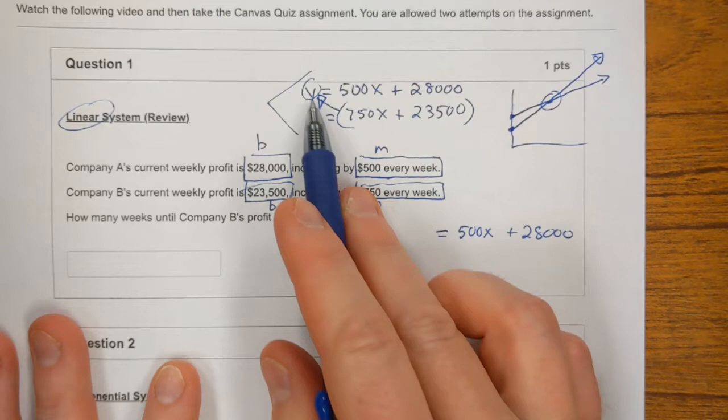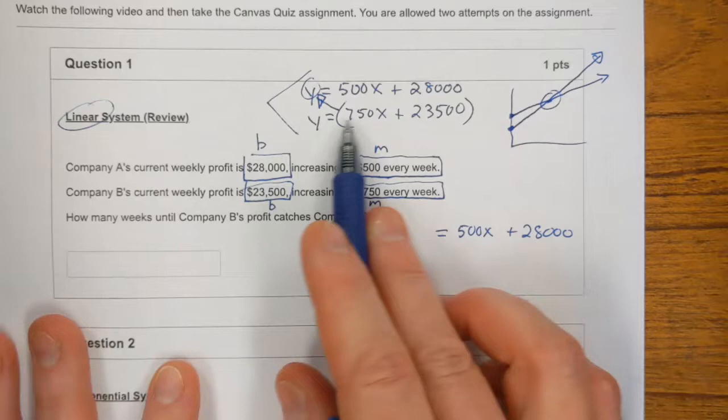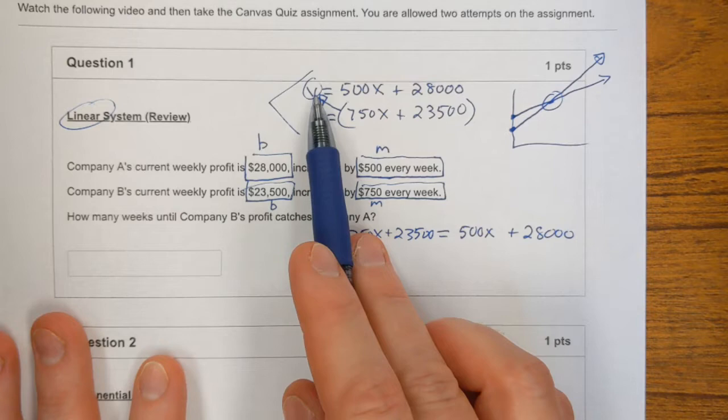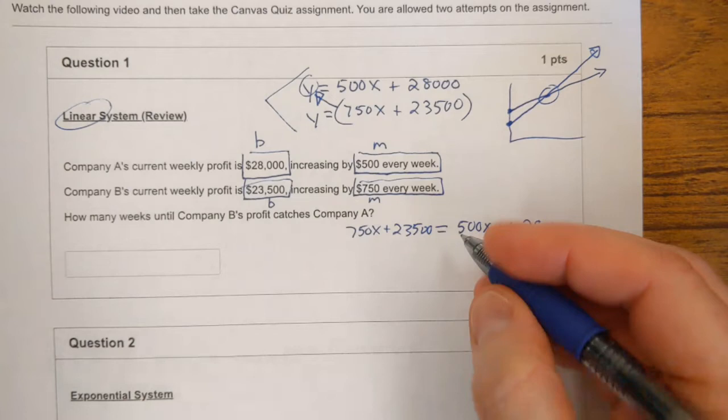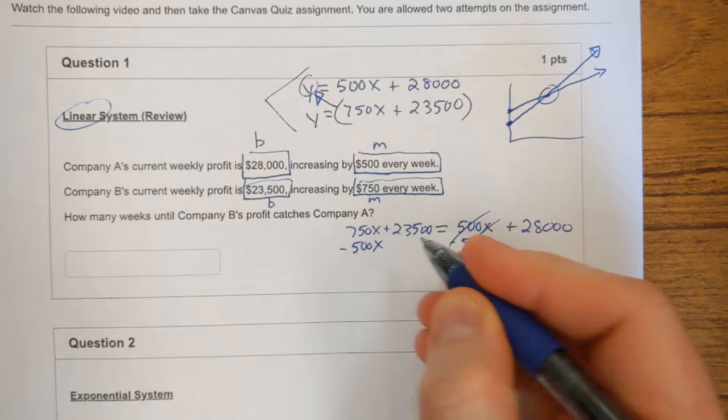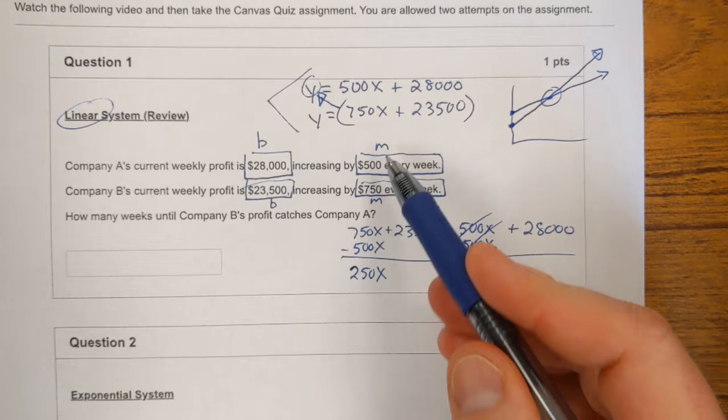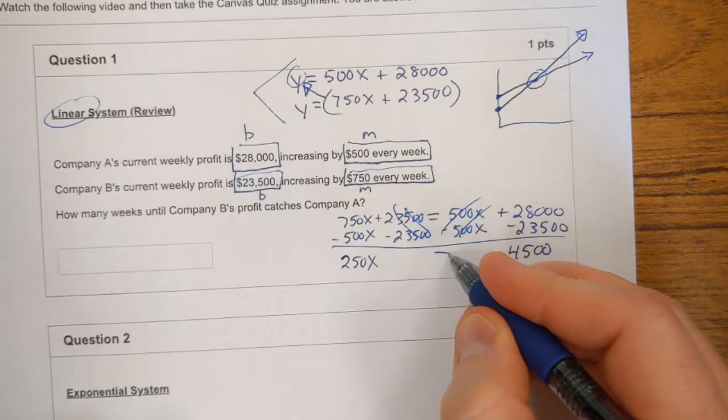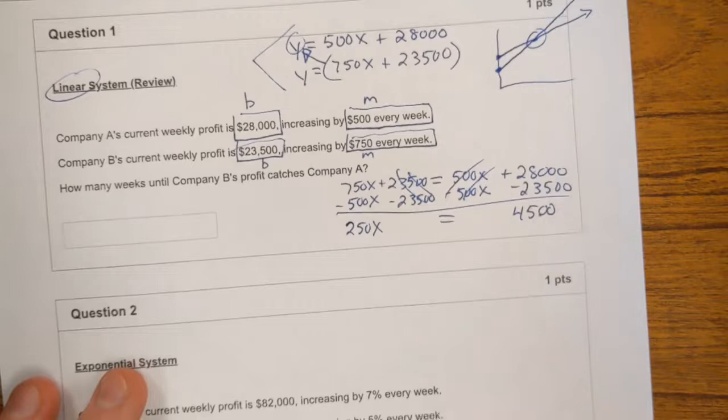And here's what's going to happen. I'm going to remove this y. I'm going to take it away. I took this y away. I made this y vanish. And I'm going to substitute it or replace it with this expression down here, which is also equal to y, 750x plus 23,500, the substitution method. This, in parentheses, takes the place of this y. And now I have this equation that's pretty easy to solve. When I solve this for x, all I have to do is subtract 500x from both sides. That leaves me with 250x. And this is just the difference in their slopes. Then I subtract 23,500 from both sides. And this leaves me with 4,500. This is just the difference between their starting points, their starting weekly profits.